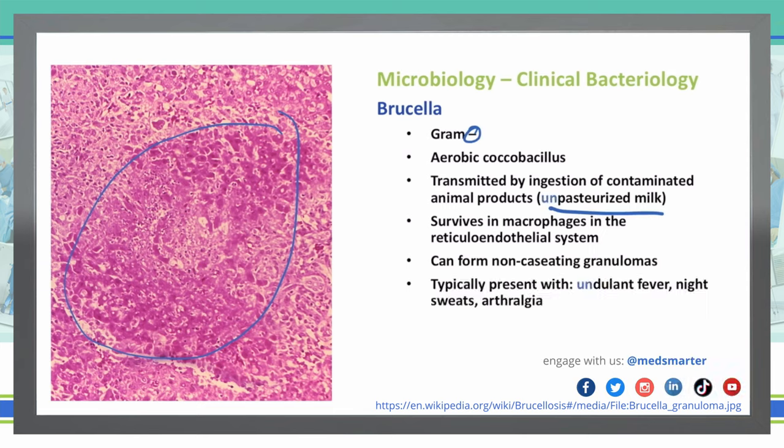Typically this will present with an undulant fever, night sweats, and arthralgias. The key associations for Brucella are undulant fever and unpasteurized milk. An undulant fever is where we see fevers that will rise and fall and rise and fall — it kind of goes up and down — and that is very characteristic of Brucella.